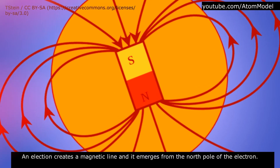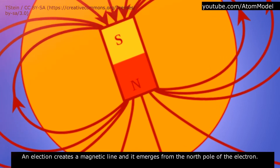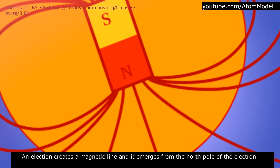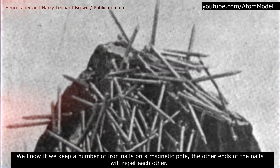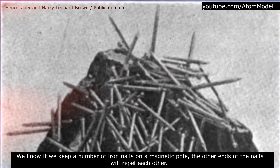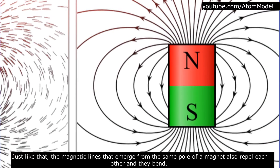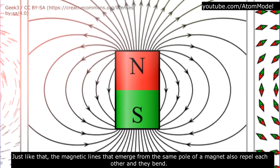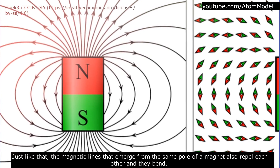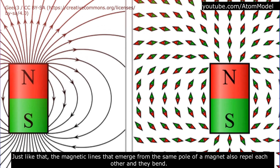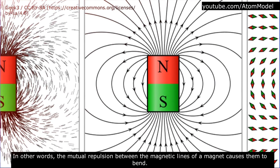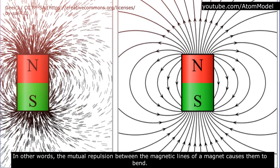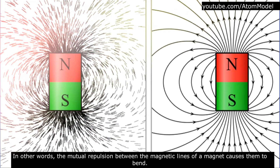An electron creates a magnetic line that emerges from its north pole. We know that if you keep a number of iron nails on a magnetic pole, the other ends of the nails will repel each other. Just like that, the magnetic lines emerging from the same pole of a magnet also repel each other and they bend. In other words, the mutual repulsion between the magnetic lines of a magnet causes them to bend.